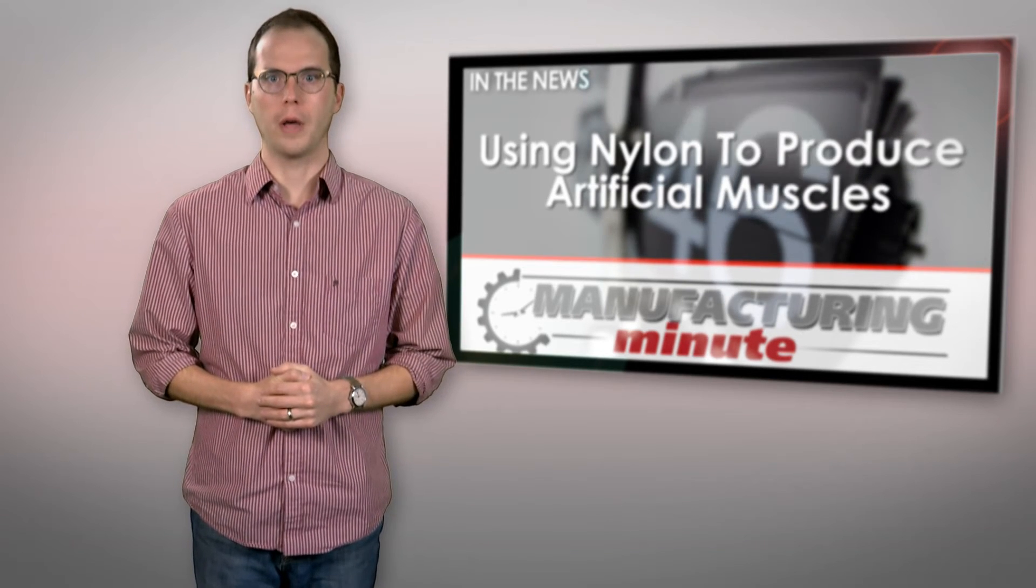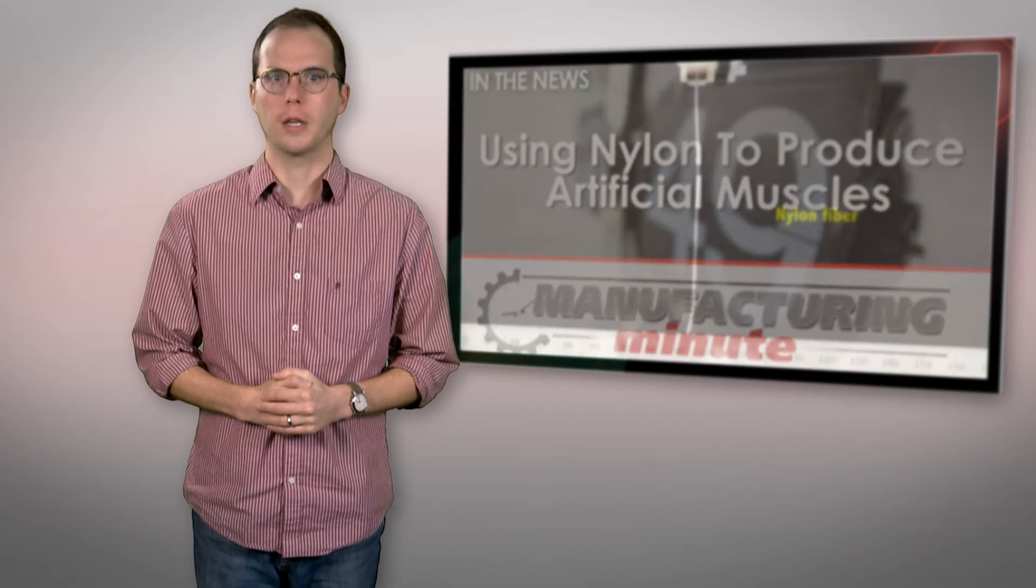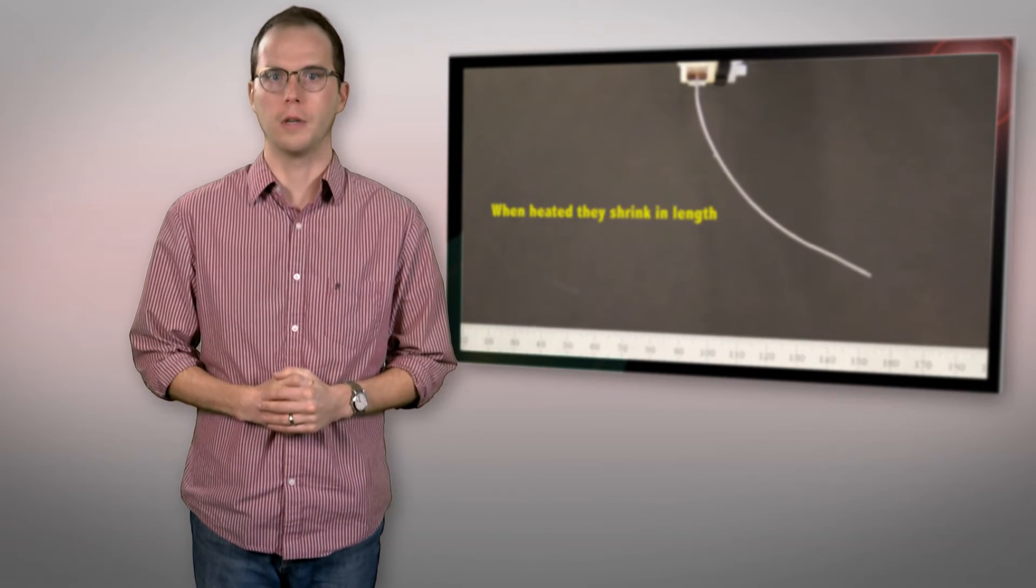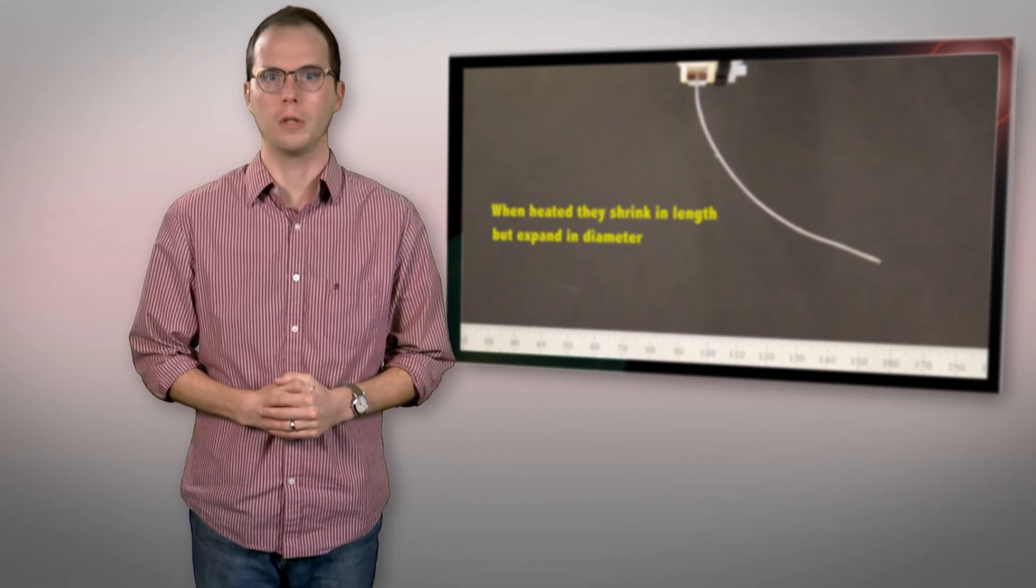Researchers have already shown how coiled nylon fibers can contract and extend like human muscles, but a system developed by researchers from MIT demonstrated that specifically shaped and heated nylon could approximate the bending action of human fingers or limbs.